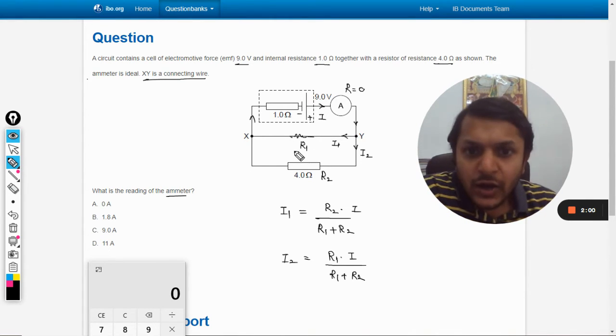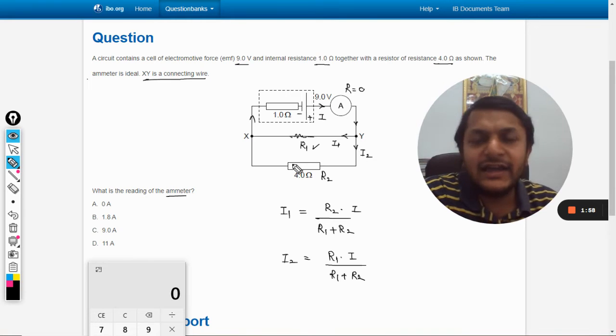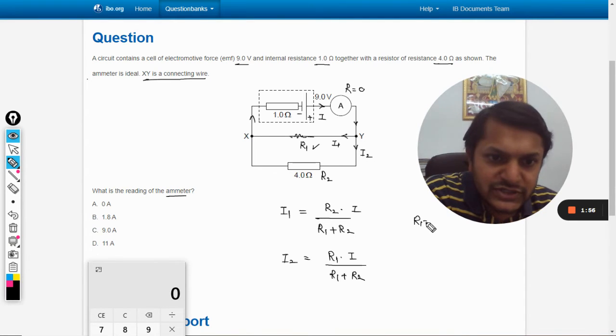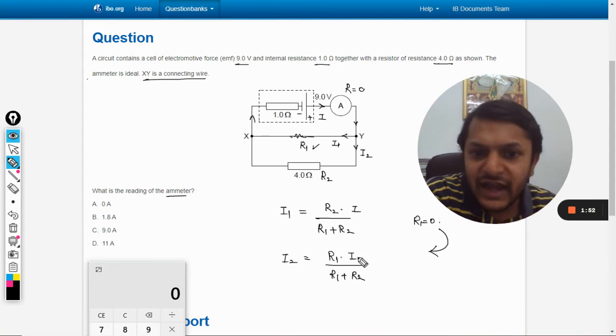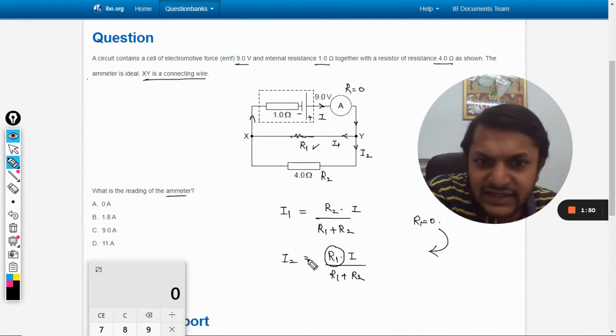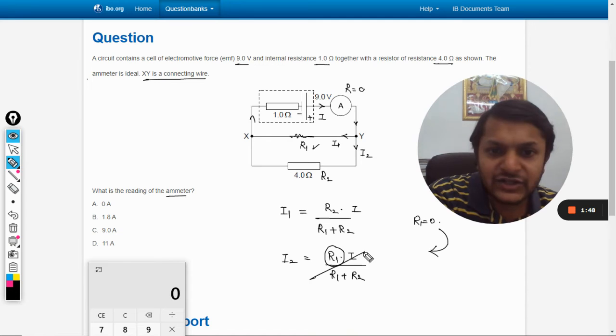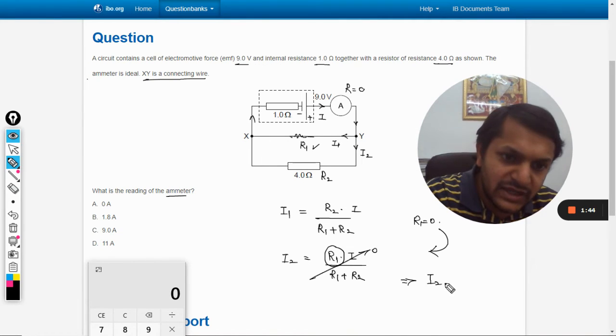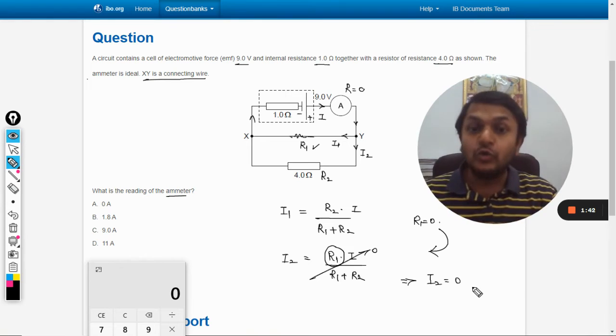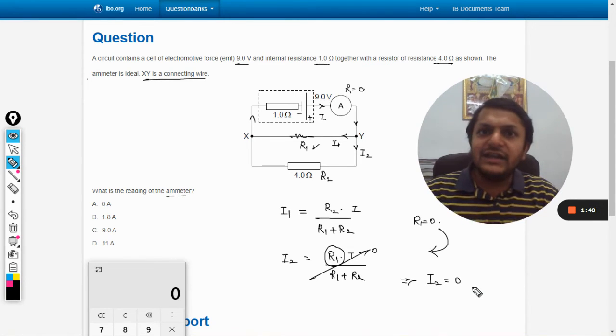Okay, so now what is happening is r1 is actually equal to zero. Now by substituting this value in both of these equations, what are we getting? See, here is the r1 in the numerator and so this means this will become zero. So it actually means that i2 is equal to zero.